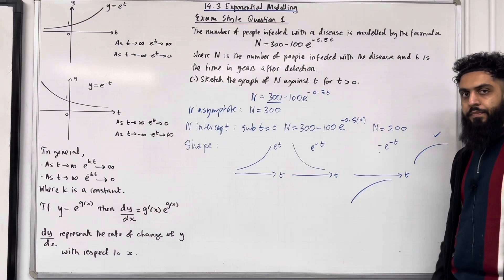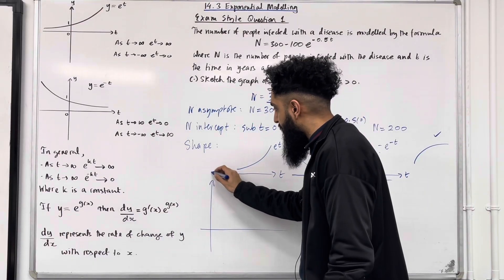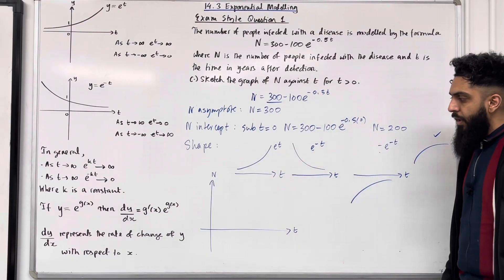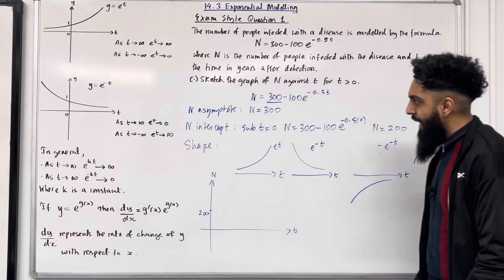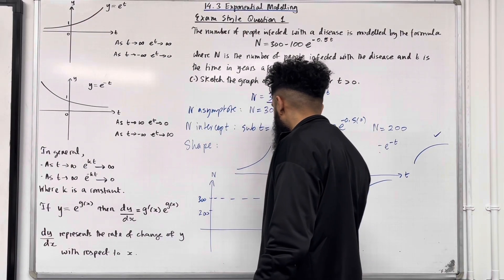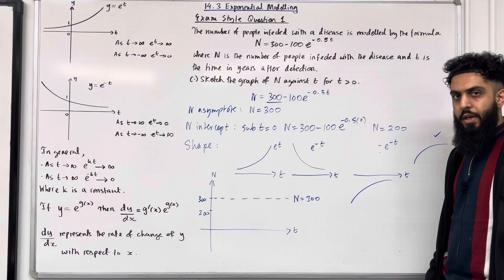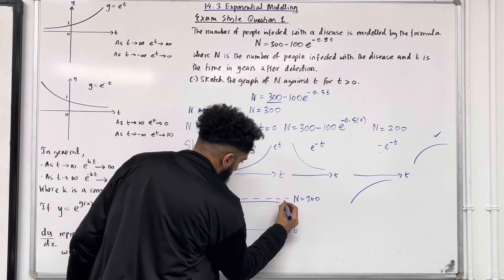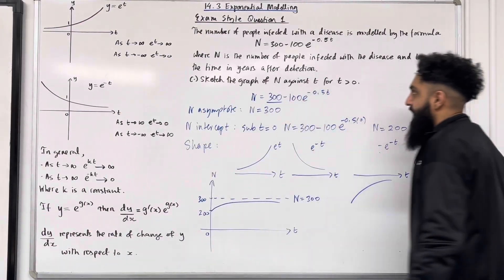So that is the desired shape of the graph. On the sketch: the vertical axis represents N (people infected) and the horizontal axis represents t (time). The N-intercept is N = 200, the asymptote is N = 300, and the curve rises toward that asymptote for t > 0. This completes exam-style question one.